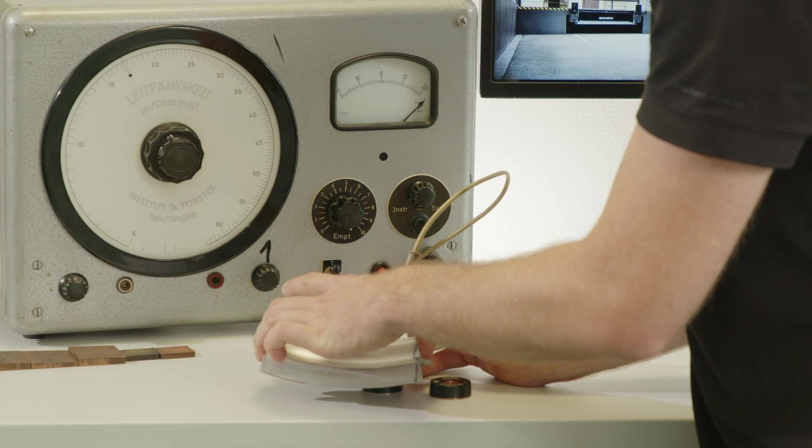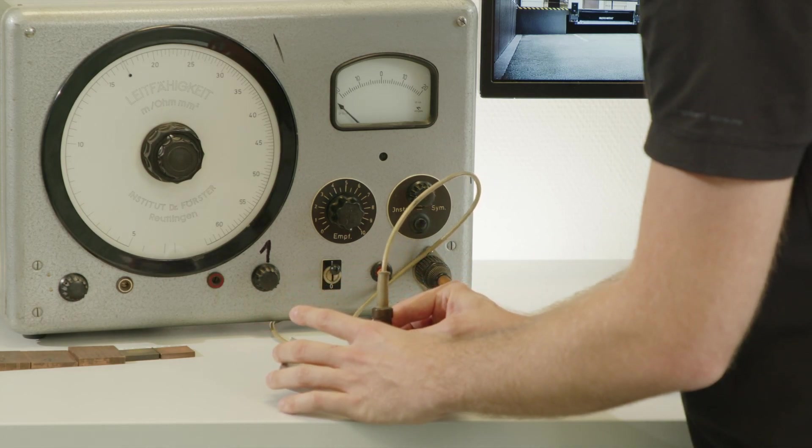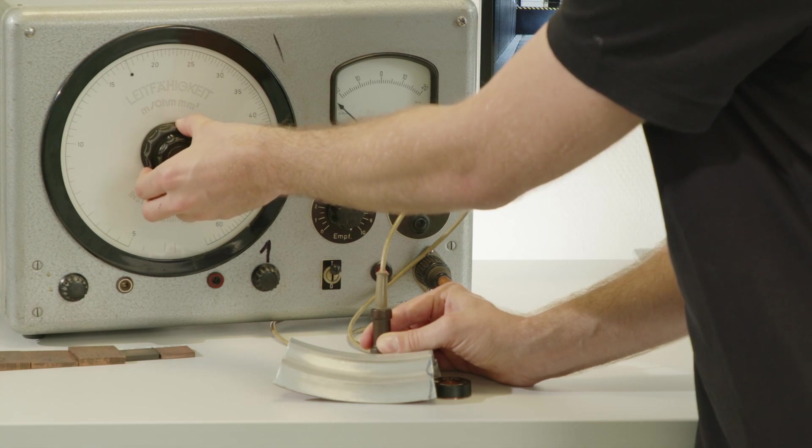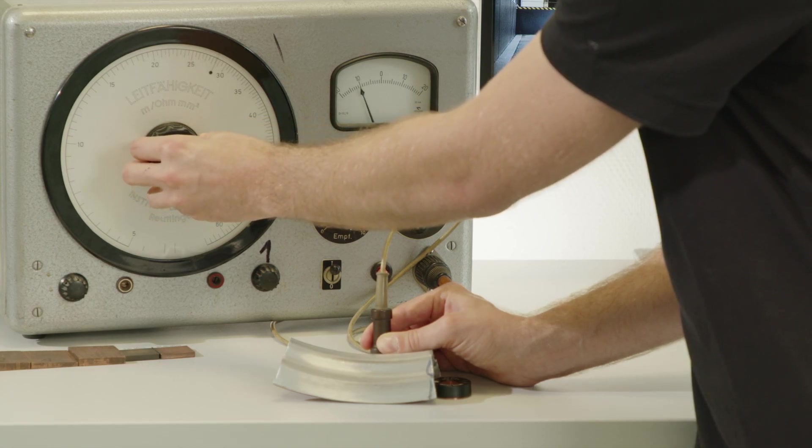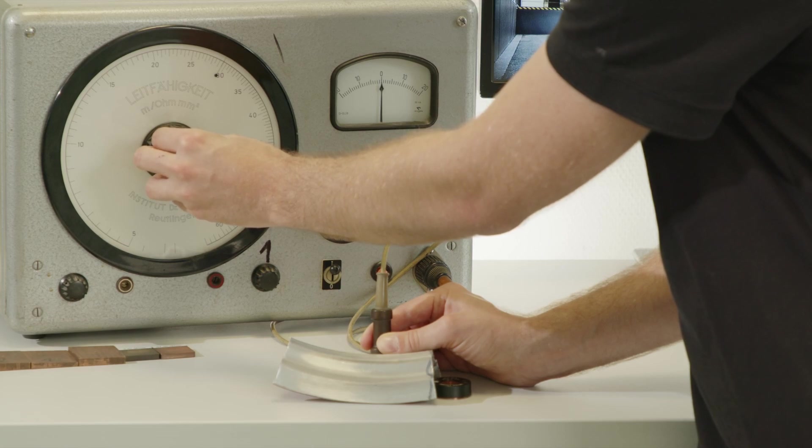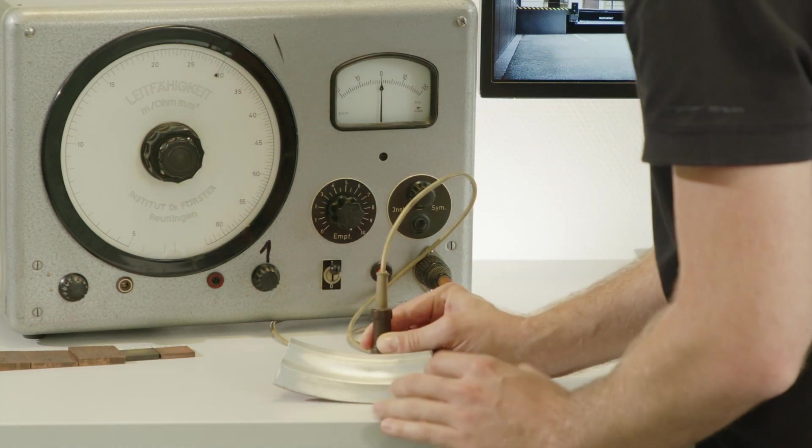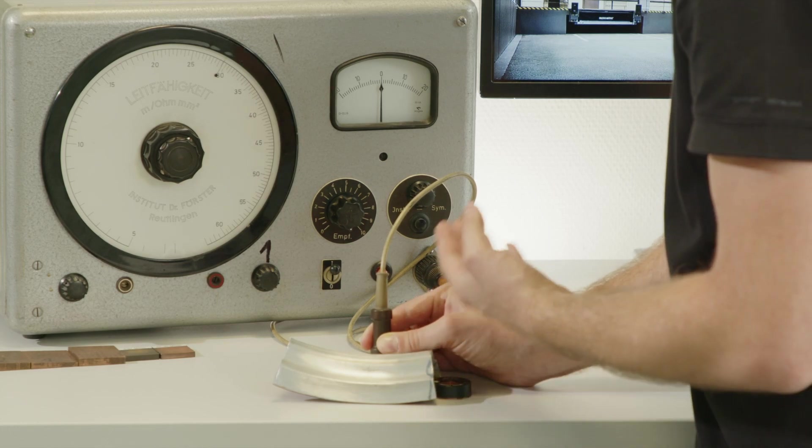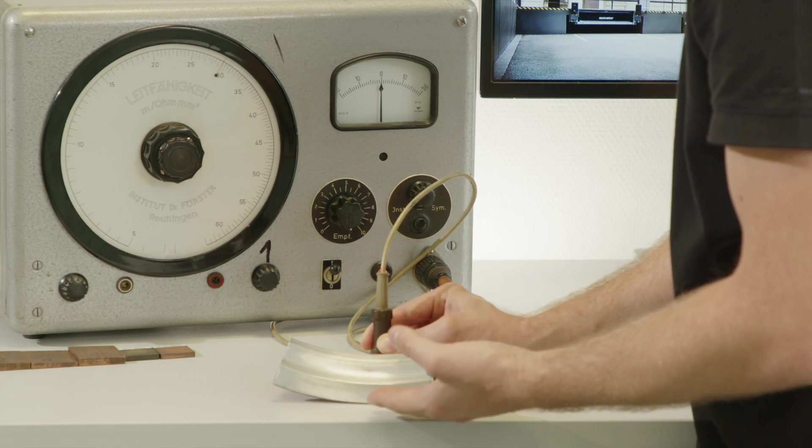So let's measure our part. I put the probe on the part. Okay, the phase is somewhere else. And now I can move my scale and I move it to zero. And now I know, okay, my conductivity value is 29.5 Megasiemens. So I know the conductivity value of the part.